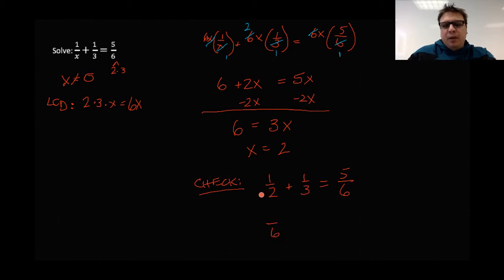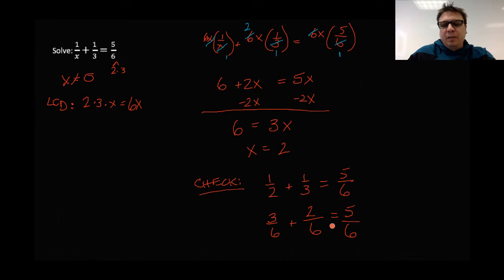So now we get one half plus one third is equal to five sixths. Let's get common denominators. I need a common denominator of six. I multiply numerator and denominator by three to get three sixths, plus — to get a six in the denominator here — I multiply numerator and denominator by two. If you go through and do the arithmetic and finish this out, that is indeed correct.